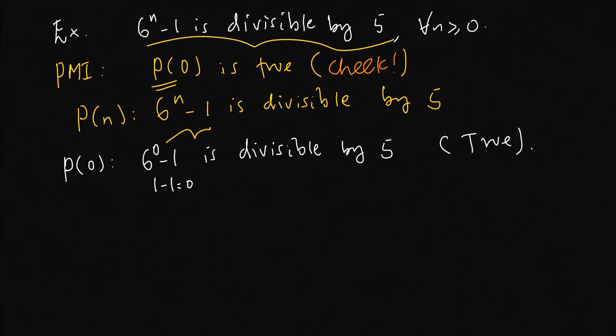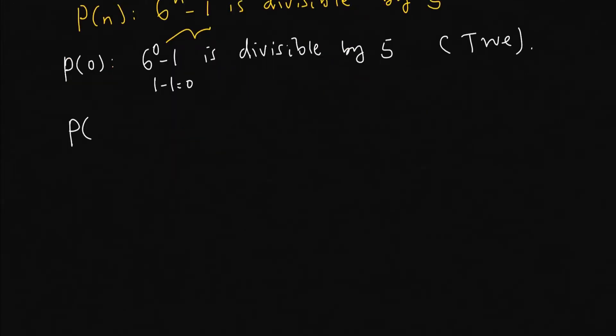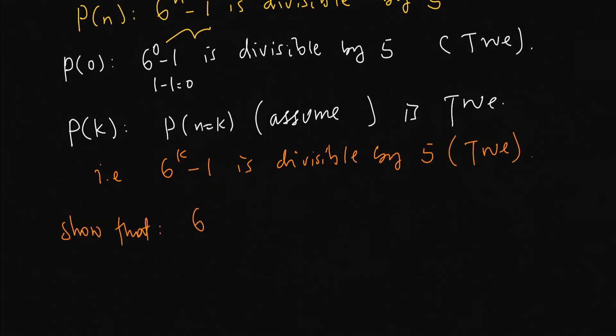Now, induction step. For any integer k greater than zero, when n is equal to k, we assume that P(k) is true. That means 6 to the power of k minus 1 is divisible by 5. And we must show that for the next integer...